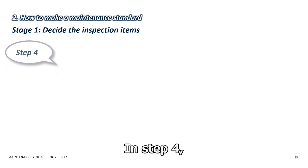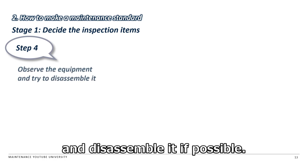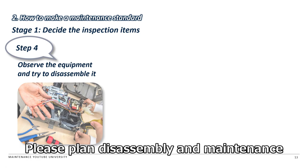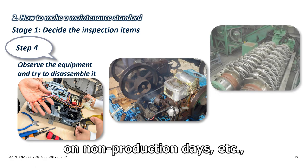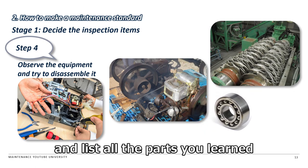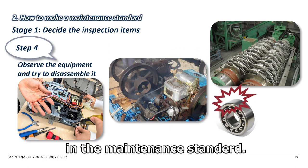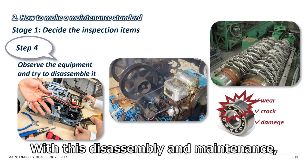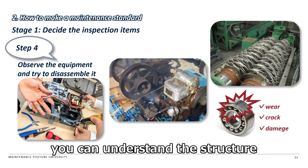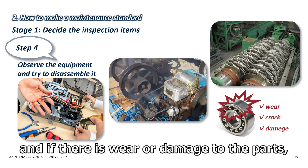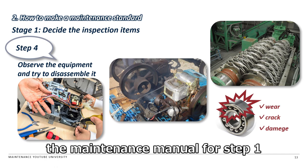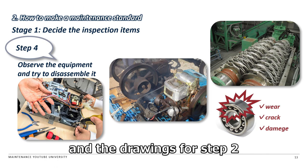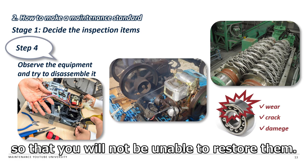In Step 4, observe the equipment closely and disassemble it if possible. Please plan disassembly and maintenance on a non-production day, and list all the parts you find while disassembling in the maintenance standard. With disassembly and maintenance, you can understand the structure of the equipment, and if there is wear or damage to the parts, you can also understand the failure mode. Be sure to prepare the maintenance manual from Step 1 and the drawings from Step 2 so that you will not be unable to restore them.